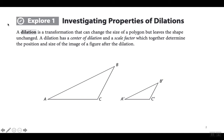Una dilatación es una transformación donde están cambiando el tamaño de un polígono para hacerlo más grande o más chiquito. Las medidas de los ángulos se mantienen igual y el polígono nuevo tiene la misma figura que el original, simplemente más grande o más chiquito.